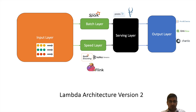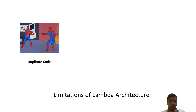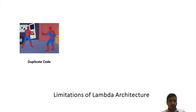Lambda architecture had a lot of issues. There was a lot of duplicate code. Since we had two layers — batch layer and speed layer — logic has to be duplicated between them. You end up duplicating the code, which makes maintenance a big headache. Development is slow because you are writing code twice, and if you make changes at one place you have to make changes at the other place too. Testing effort and maintenance effort both increase.